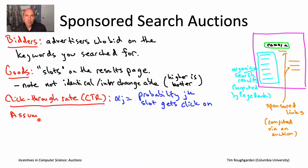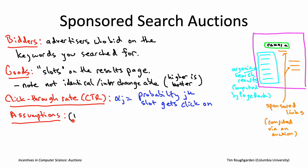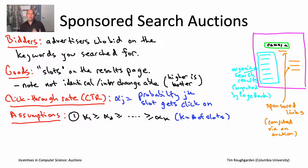Now let me tell you more about the assumptions we're going to make on these CTRs. The first assumption is a quite reasonable one backed up by user studies: higher slots are better. So as you go from the top slot down to lower slots, the click-through rates can only decrease.